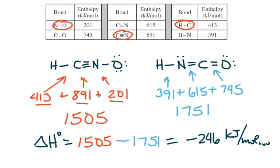So these are these three values, and we're going to add them together and get 1505, these are kilojoules per mole. And then for the other structure, we have an HN single bond, 391. We have an NC double bond, and that's this guy, CN, and we have a CO double bond, that's this one. So we have these three values, and we add them together, that's 1751.